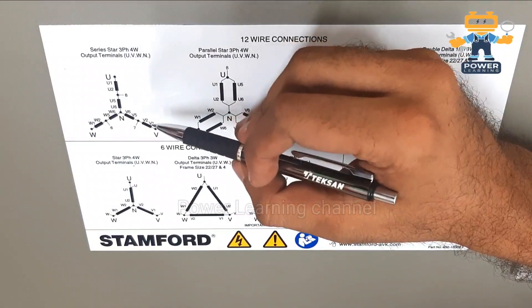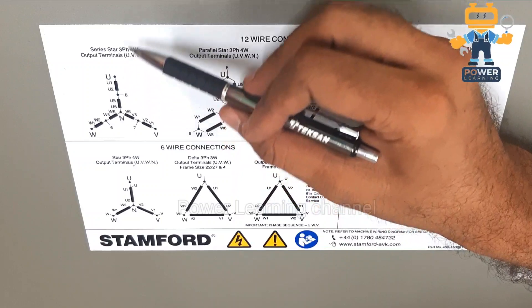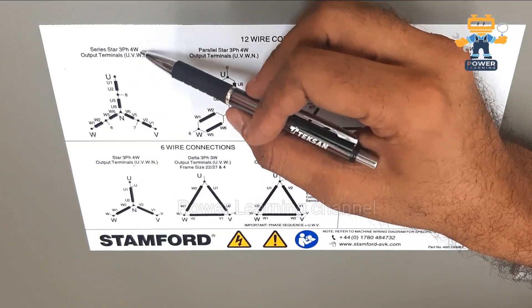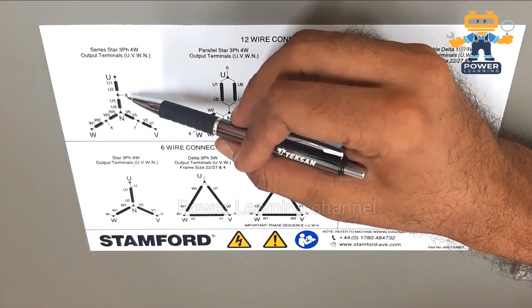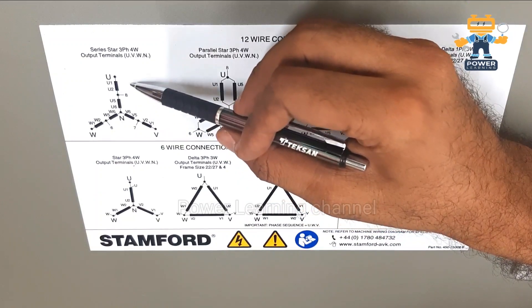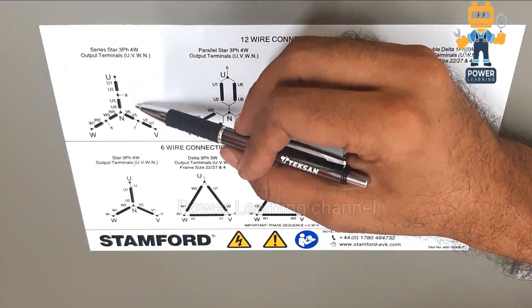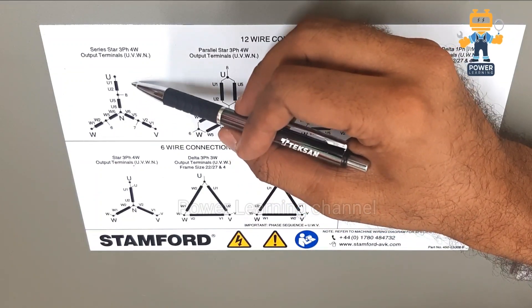In the standard configuration we use series star — a three-phase four-wire system — producing 380 volts line to line and 220 volts line to neutral.